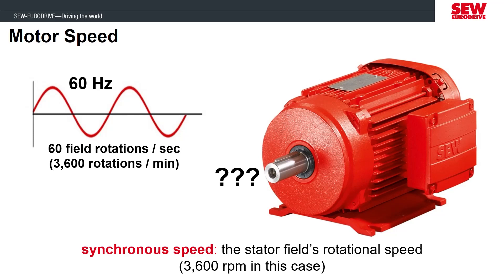If we took this same motor to Europe and connected it to the power supplies there, the motor's synchronous speed wouldn't be 3,600 RPM but would be 3,000, because they supply 50 Hertz.